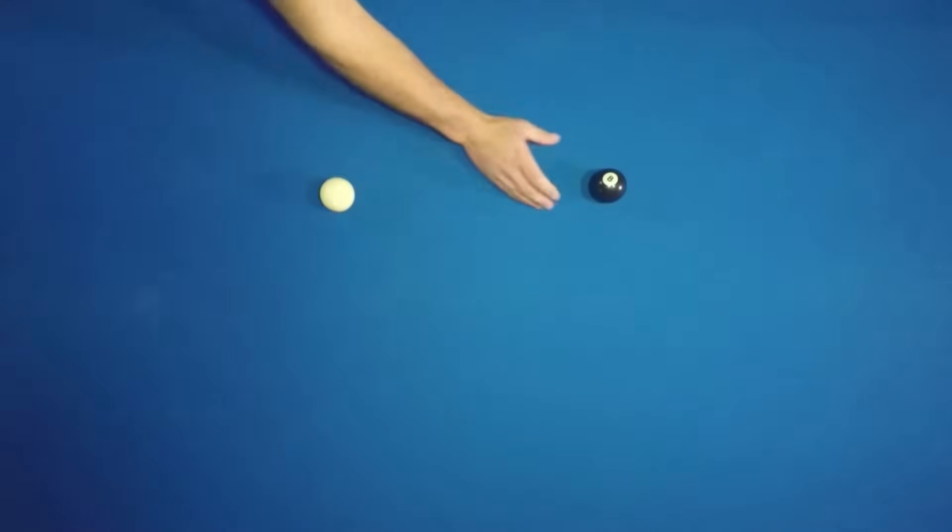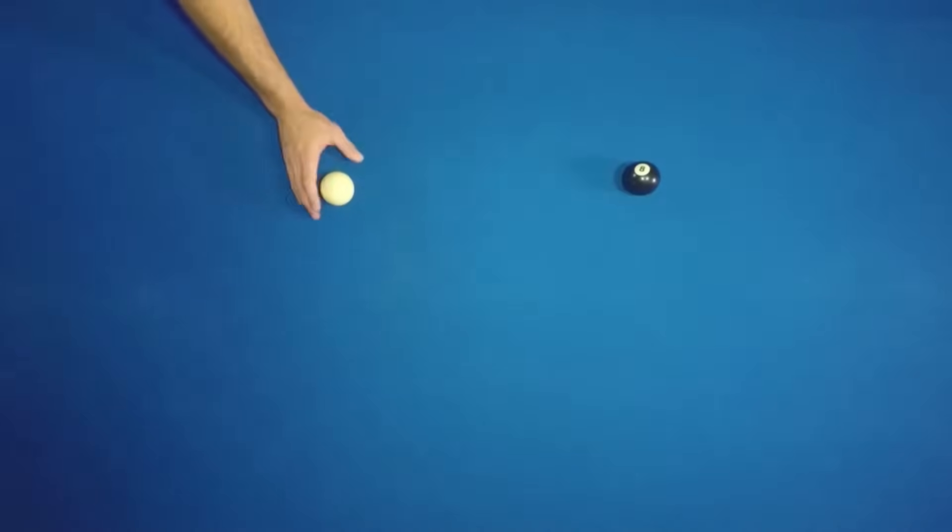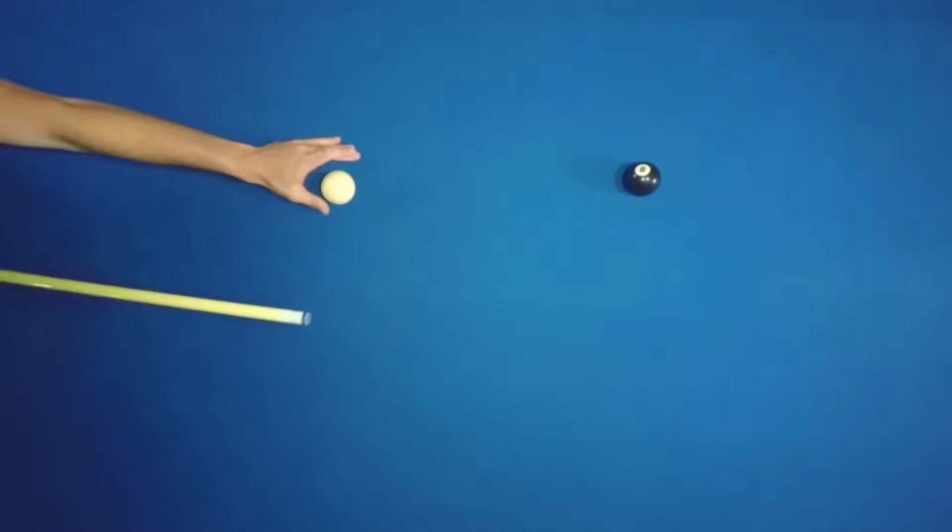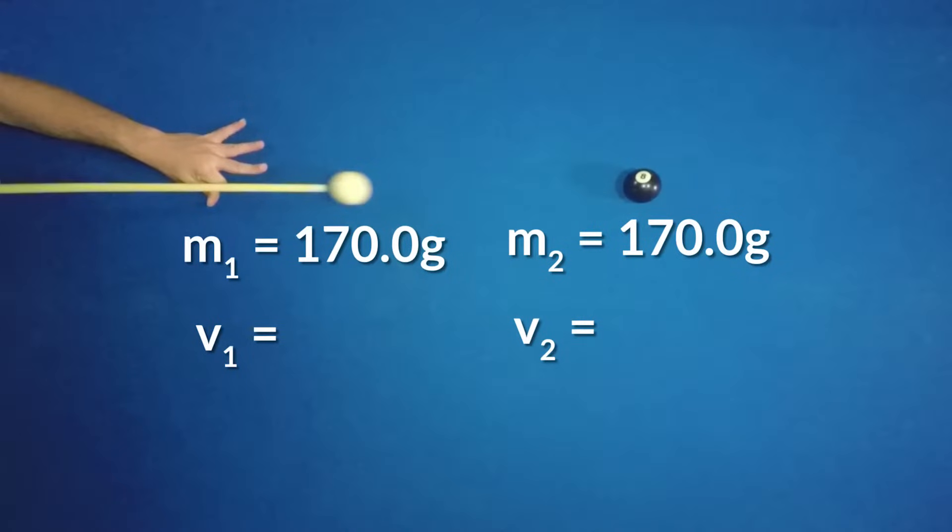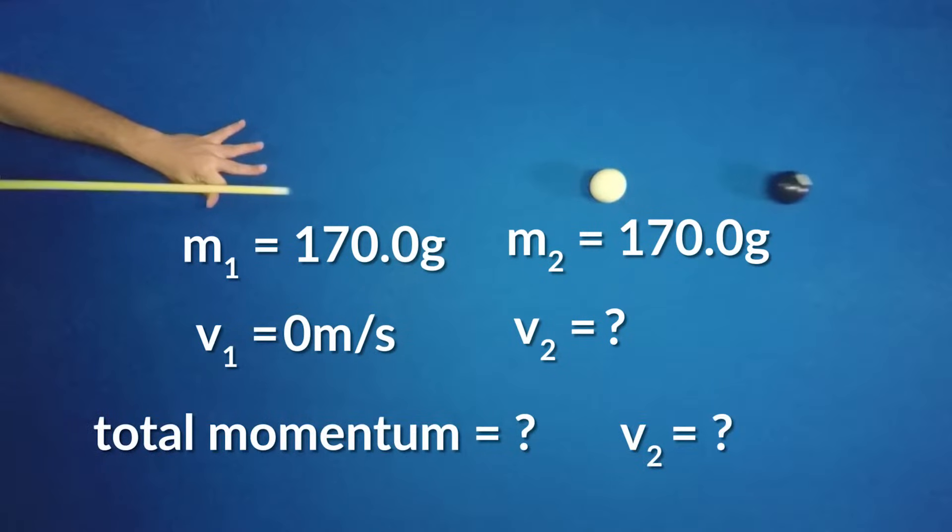A pool player is about to use the cue ball to make a direct hit on the eight ball, which is at rest. Each ball has a mass of 170.0 grams, and the cue ball's initial speed is 6.00 meters per second. After the collision, the cue ball comes to a stop. If no momentum is lost in the collision, what is the total momentum of this system, and how fast is the eight ball moving after the collision?